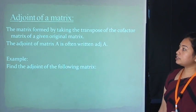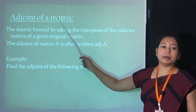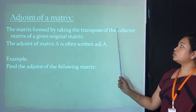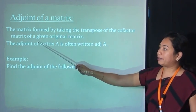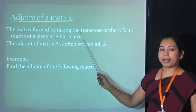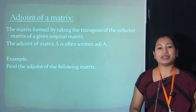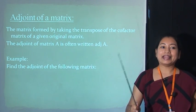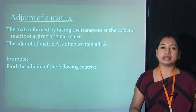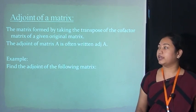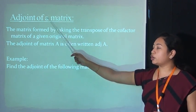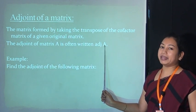Now let's take the last topic: the adjoint of a matrix. The adjoint is the matrix formed by taking the transpose of the cofactor matrix of a given original matrix. To find the adjoint: first, take the cofactor of each and every element; second, change the signs; and third, take the transpose. The result is the adjoint of matrix A, normally denoted as adj(A).